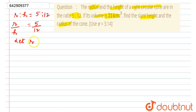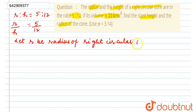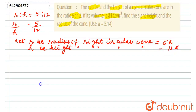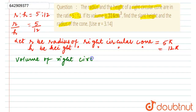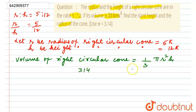Let r = 5k and h = the height of the right circular cone = 12k. The volume of the right circular cone is given as 314 cm³. The formula for the volume of a right circular cone is equal to one-third π r² h.